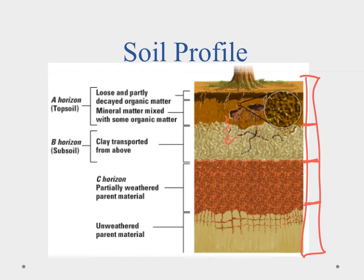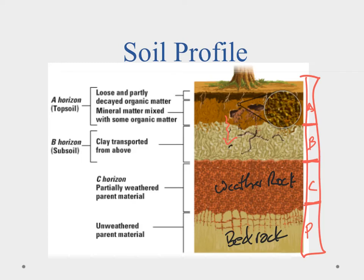The C horizon contains partially weathered parent material. Below that is the unweathered parent material — the bedrock that's just beginning to break up. The B horizon is primarily clay, roughly as deep as roots will go. The A horizon above that is our soil — our dirt. The lessons will go into the soil horizons in a lot more detail; this is just a quick overview.